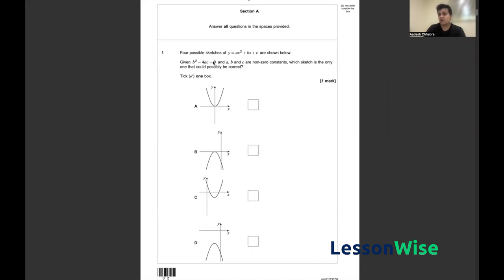Firstly, b squared minus 4ac is equal to zero. If that's the case, that means y only has one real root, i.e., it touches the x-axis at only one point, which rules out options C and D.